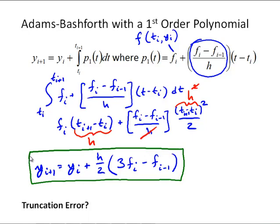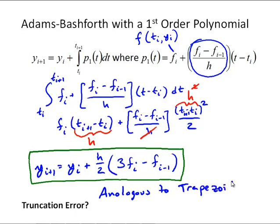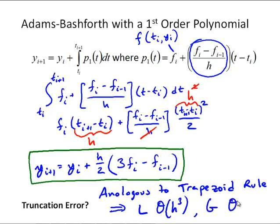For the truncation error of the second-order Adams-Bashforth, we recognize that we're approximating the derivative function as a line and integrating it — analogous to the trapezoid rule. The trapezoid rule is locally order h^3 and globally order h^2. So the second-order Adams-Bashforth is globally second-order accurate.